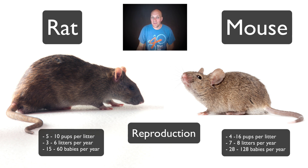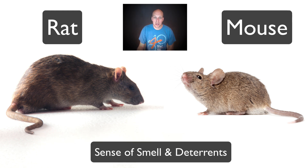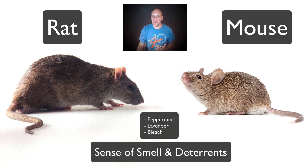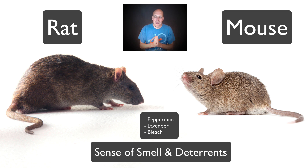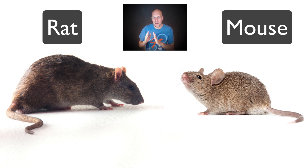Unlike mice, rats need to eat around 15 to 30 grams per day and drink much more water — around 15 to 16 milliliters a day — and will travel a mile away just for a glass of water. Both species have a very acute sense of smell. Rats and mice are repelled by highly concentrated peppermint, lavender, and even the smell of bleach. This might not get rid of your problem, but it will deter them. Baking soda mixed with water and something enticing can be deadly to rodents, though mice will be lured more easily than rats.